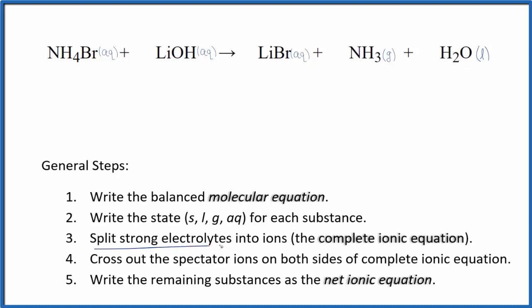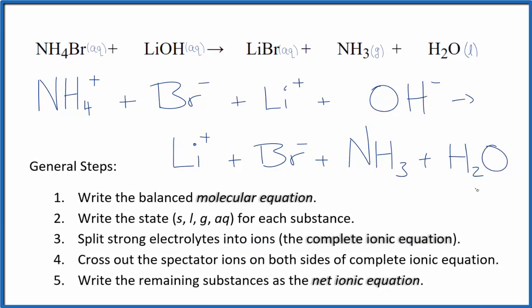Now we can split the strong electrolytes into ions. That gives us the complete ionic equation. That looks like this. So this is the complete ionic equation for NH4Br plus LiOH.